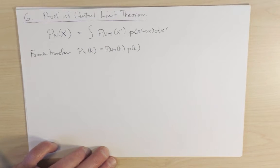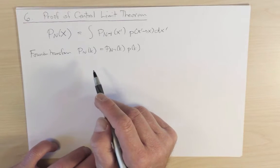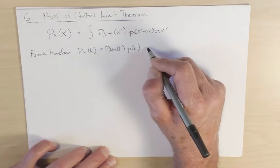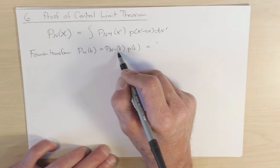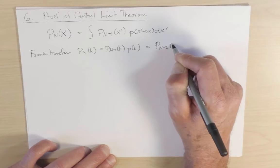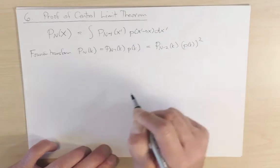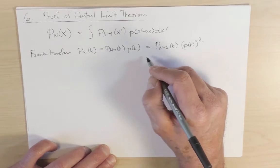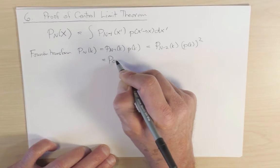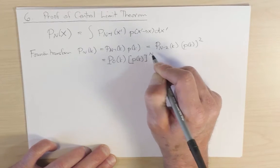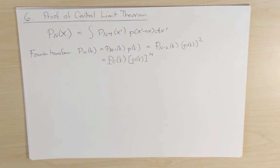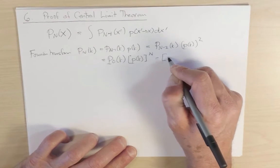I can now take this recursion formula and just recurse it all the way down to the start of the walk. P_{n-1}, well that's nothing more than P_{n-2} of k times little p of k squared. I just continue this process to the very end, and what I'm going to get is that this equals P_0 of k times little p to the power n. If we imagine that the particle starts at the origin, then P_0 at x is a delta function at x, its Fourier transform is just one, and so this just reduces to little p of k to the power n.